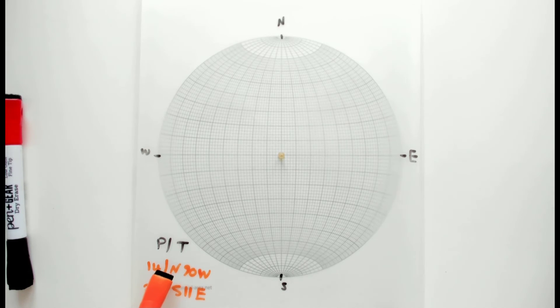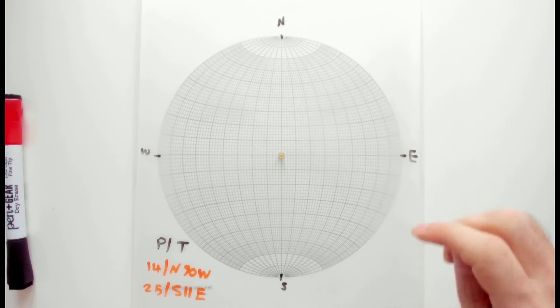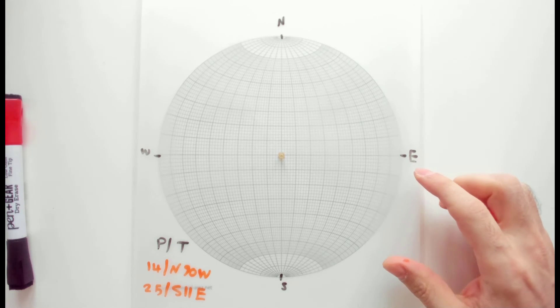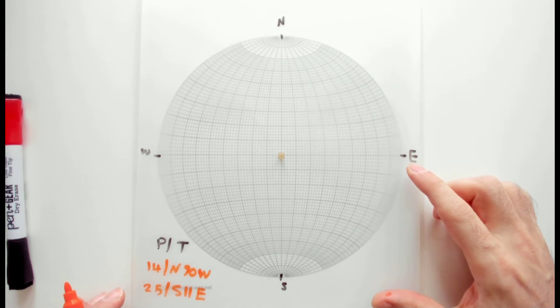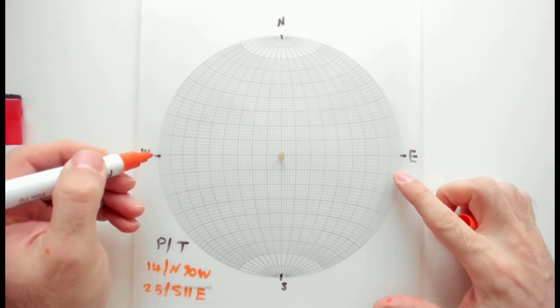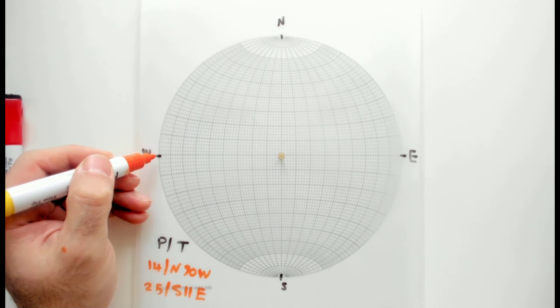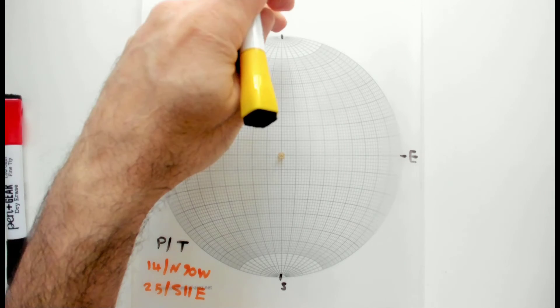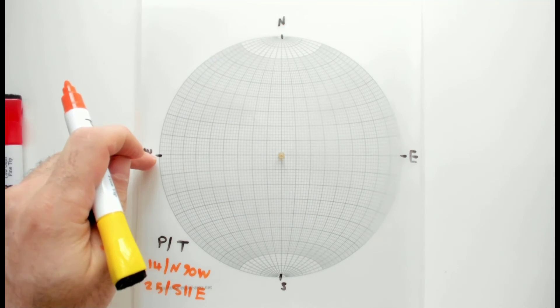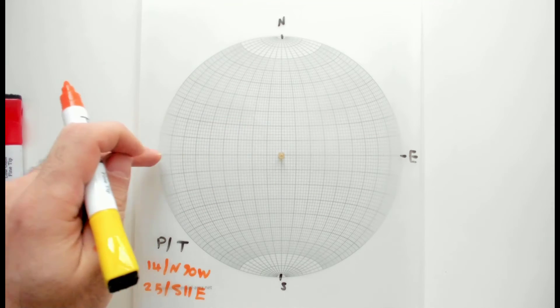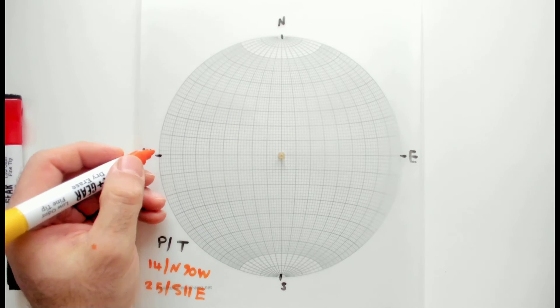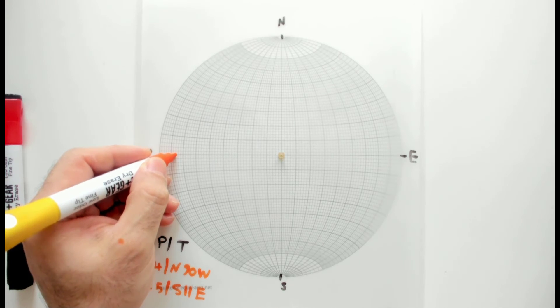Let's plot these two. The first one, the trend is N90W, which is actually here, and then 14 degrees. So from north 90 west, you go 14 degrees towards the center. If I count 14 degrees, that's going to be the point that is given here.